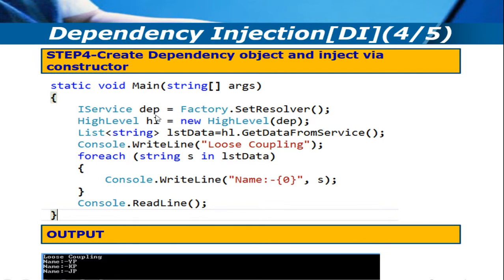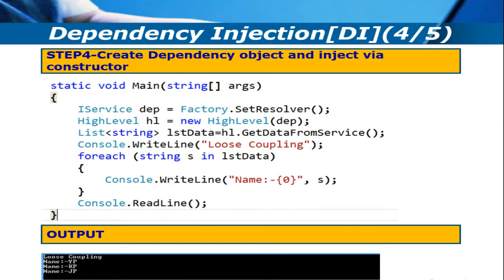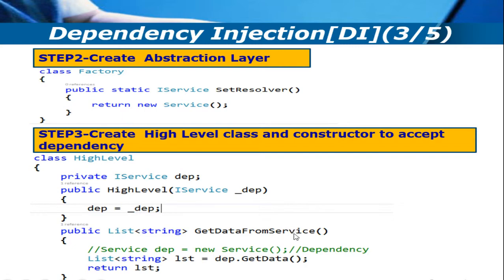When I get the dependency in the first step, I pass it into the constructor of the high level class. So when we call new HighLevel and pass the dependency, we are injecting the dependency inside the high level module via the constructor. This is called constructor injection. Once the constructor injection happens, we call hl.getDataFromService, which calls your get data function.